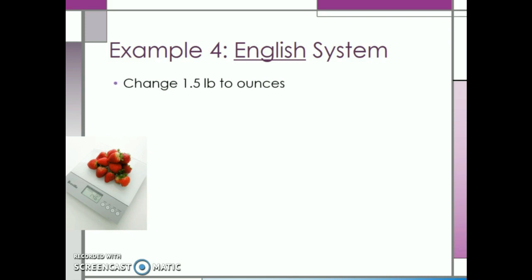If we want to convert one and a half pounds into ounces, the first thing we need to do is write our starting value of one and a half pounds as a fraction over one.